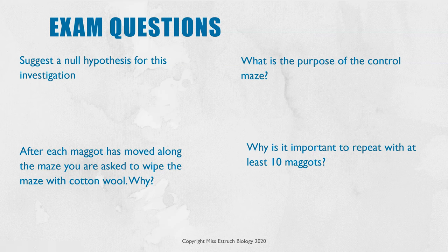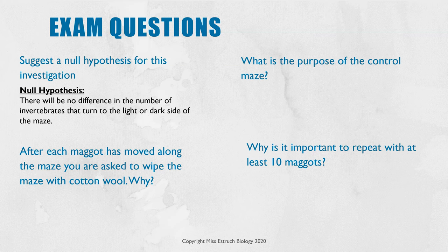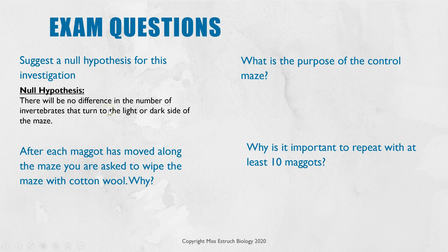You might also get exam questions linked to this practical. The first common one is: suggest a null hypothesis. A null hypothesis states you don't get the pattern you're expecting — so here: there will be no difference in the number of invertebrates that turn to the light or the dark side of the maze. Whenever you write a null hypothesis, you must state both the independent variable (the light and dark side) and the dependent variable (the number of invertebrates going to either side).